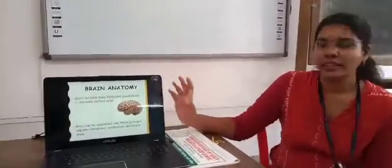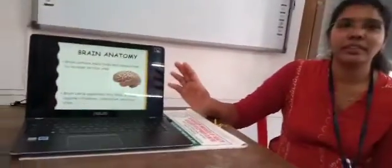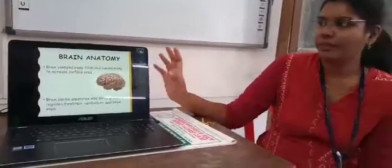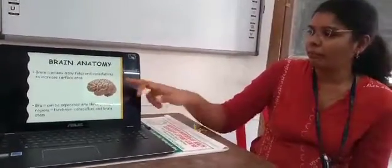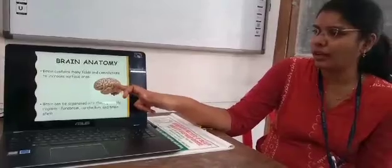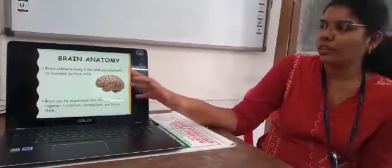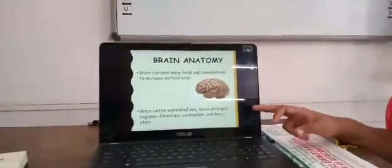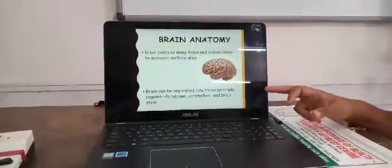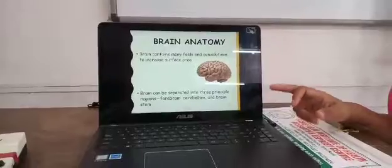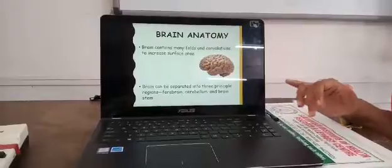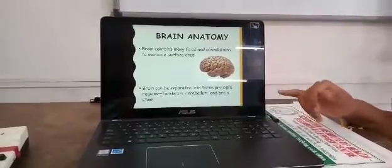The brain is the most essential part of the human body. It contains many folds called convolutions. The brain is kept folded to increase the surface area. The brain can be separated into three principal regions: the forebrain at the front, the cerebellum, and the brain stem.